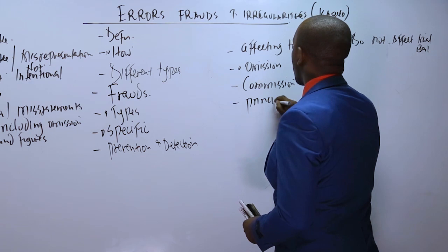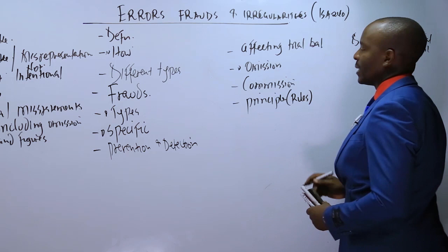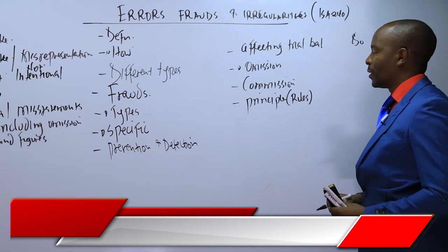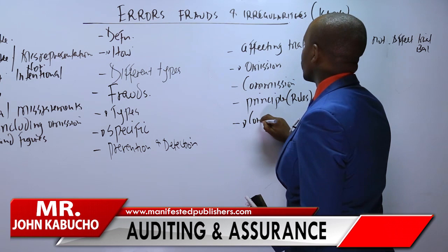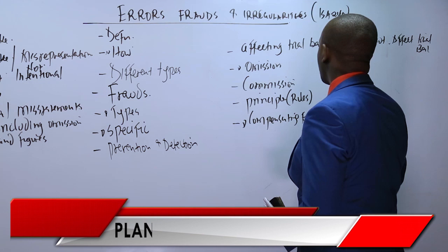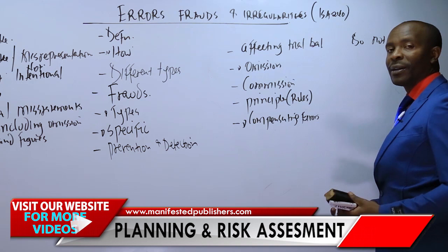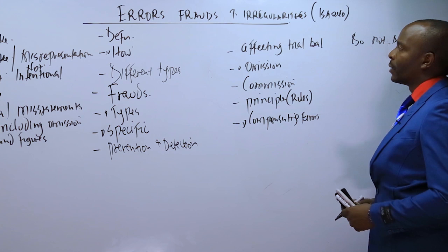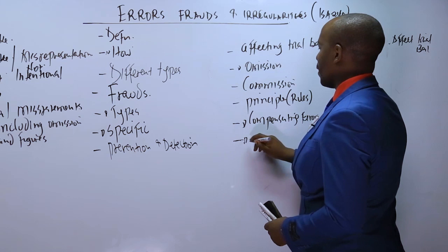The error of principle occurs when we do not follow the rules and regulations governing accounting entries — for example, recording purchases of goods and services under motor vehicle or capital expenditure, which affects the financial statements. Compensating errors occur when you record one item of, say, 50 in a wrong account by debiting, and then credit 50 in another account from a different area, so they compensate each other and may or may not affect the trial balance.